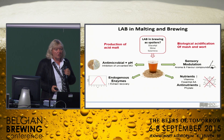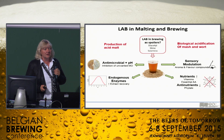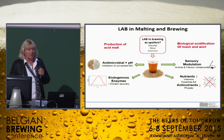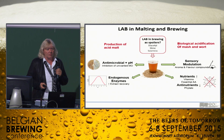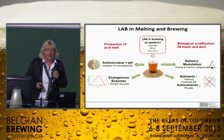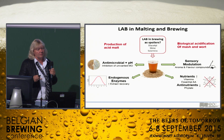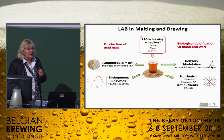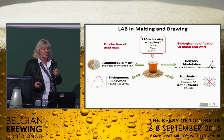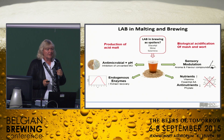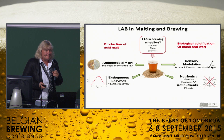Lactic acid bacteria in malting and brewing — some of you hate them, others like them. The ones who hate them do so because they can cause spoilage in beer, diacetyl, and slime production. In Germany, traditionally where people worked with the Reinheitsgebot, they've been used for the production of acid malt and also the biological acidification of mash and wort. In brewing, everything which has a lower pH actually works a little bit better. Here in Belgium they love their lactic acid bacteria because it's part of the brewing tradition for those very traditional beers like the lambic beers.